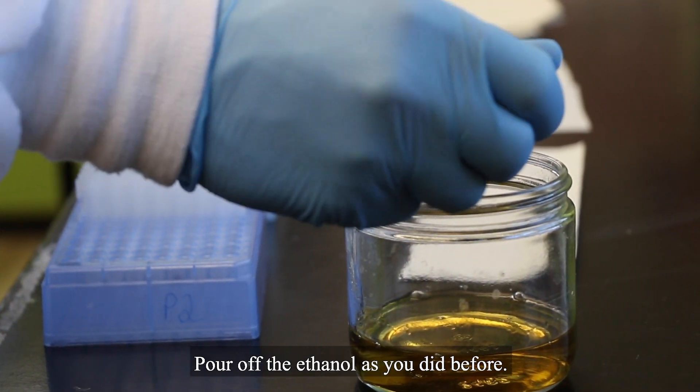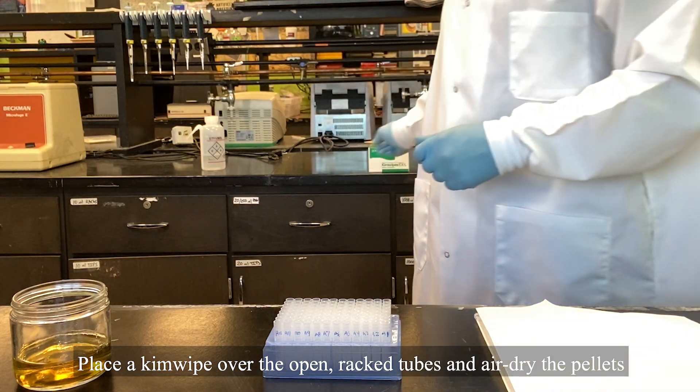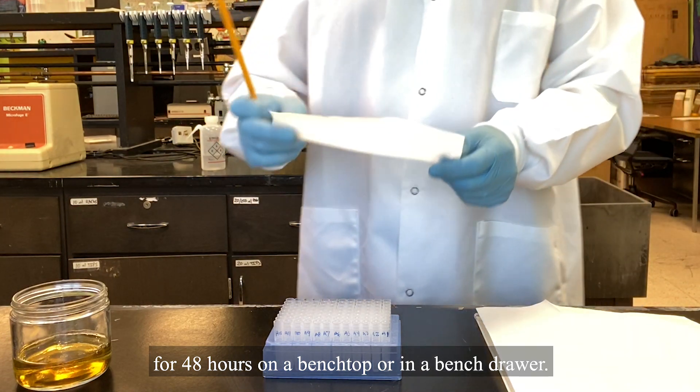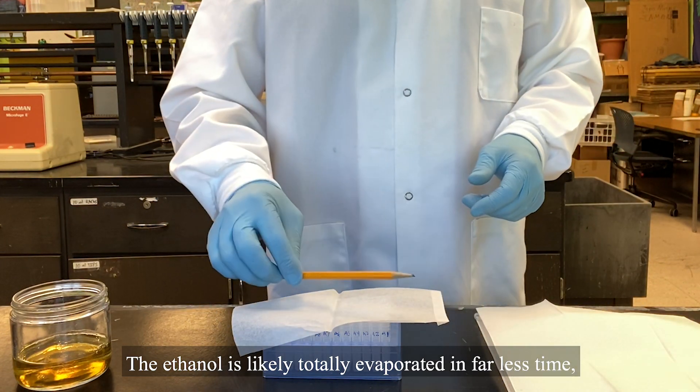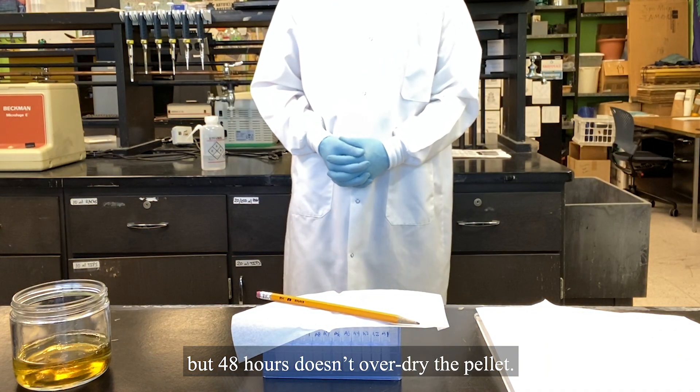Pour off the ethanol as you did before. Place a chem wipe over the open racked tubes and air dry the pellets for 48 hours on a bench top or in a bench drawer. The ethanol is likely totally evaporated in far less time, but 48 hours doesn't overdry the pellet.